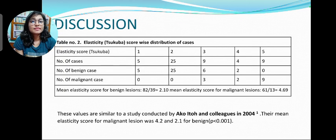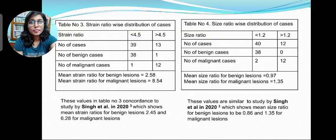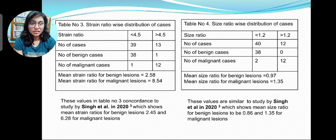Discussion. Table 2 shows elasticity score-wise distribution of cases, in which the mean elasticity score for benign and malignant lesions are 2.1 and 4.69 respectively. These values are similar to a study conducted by Akowito and colleagues in 2004. Table 3 shows strain ratio-wise distribution, with mean strain ratios for benign and malignant lesions of 2.58 and 8.54. Table 4 shows size ratio-wise distribution, with mean size ratios for benign and malignant lesions of 0.97 and 1.35 respectively. These values are in concordance with the study by Singh et al. in 2020.